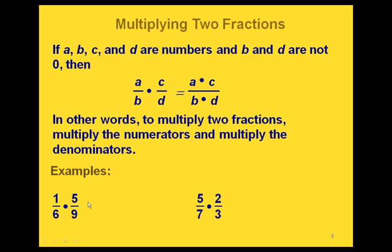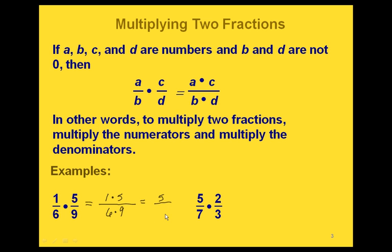Here are a couple of examples. If we're multiplying 1 sixth times 5 ninths, then all we're going to do is take our two numerators — the 1 and the 5 — and multiply those together. And on the bottom, we take our two denominators and multiply those two together. This gives us one fraction: on the top we end up with 5, and on the bottom we end up with 54.